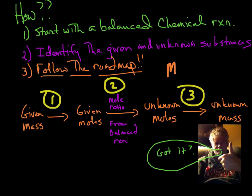And then finally, to follow the roadmap. And I'm going to give you a very simple roadmap here. This roadmap is what we call a mass-mass problem. I'm going to be given a mass, I'm going to be asked for a mass. Take your given mass and I'm going to convert it to given moles. The given is again what you are provided with in the problem - you know the amount of this, so I'm going to convert from grams to moles.